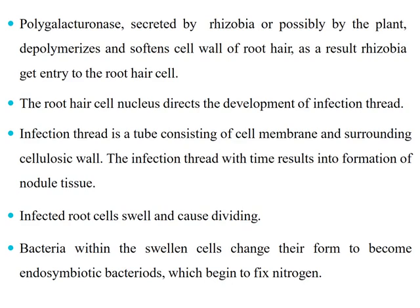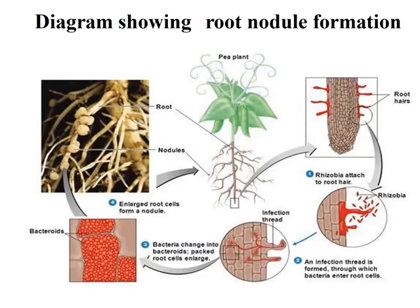The process is not simple — first, chemicals secreted by bacteria or plants depolymerize and soften the cell wall of root hairs. After the root hairs are softened, Rhizobacteria gain entry into the root hair cells. An infection thread then develops, and this is necessary for nodule development. The infection thread, a tube of cell membrane and cellulosic wall, results in the formation of nodule tissues, confirming that infection is necessary for root nodule development.